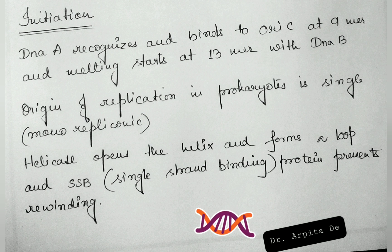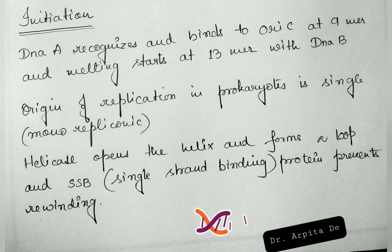In initiation, DnaA recognizes and binds to OriC at the 9-mer region, and melting starts at the 13-mer region with DnaB. The 9-mer region is where DnaA binds and identifies OriC, and the 13-mer is an AT-rich region where melting starts. Helicase largely aids in this melting process. The origin of replication in prokaryotes is single, i.e., monorepliconic.